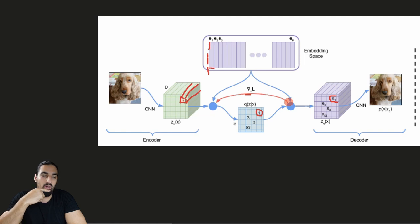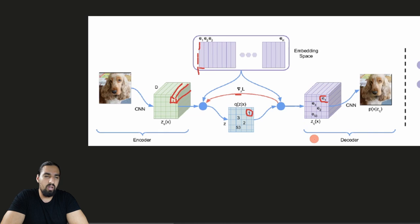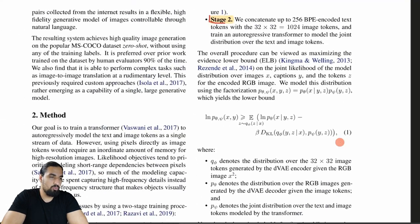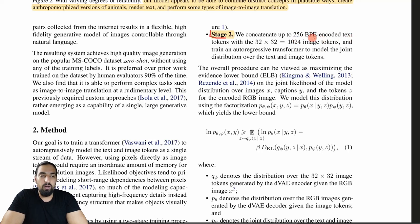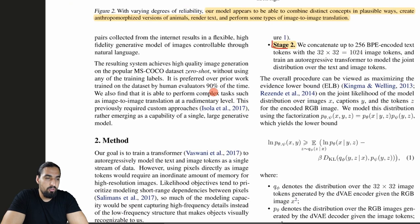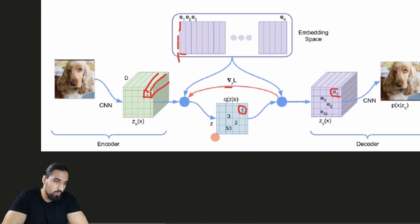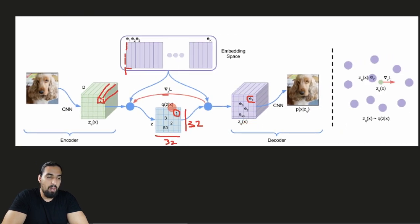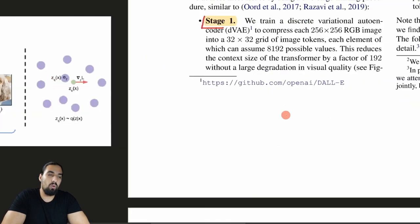That's in a nutshell how VQVAE works — I even went through some code in my VQVAE video if you want more detail. Once you train this model you have trained embedding vectors, an encoder, and a decoder. The second step is the transformer: you concatenate up to 256 BPE-encoded text tokens with 32×32, that's 1024 image tokens, and train an autoregressive transformer to model the joint distribution over the text and image tokens.